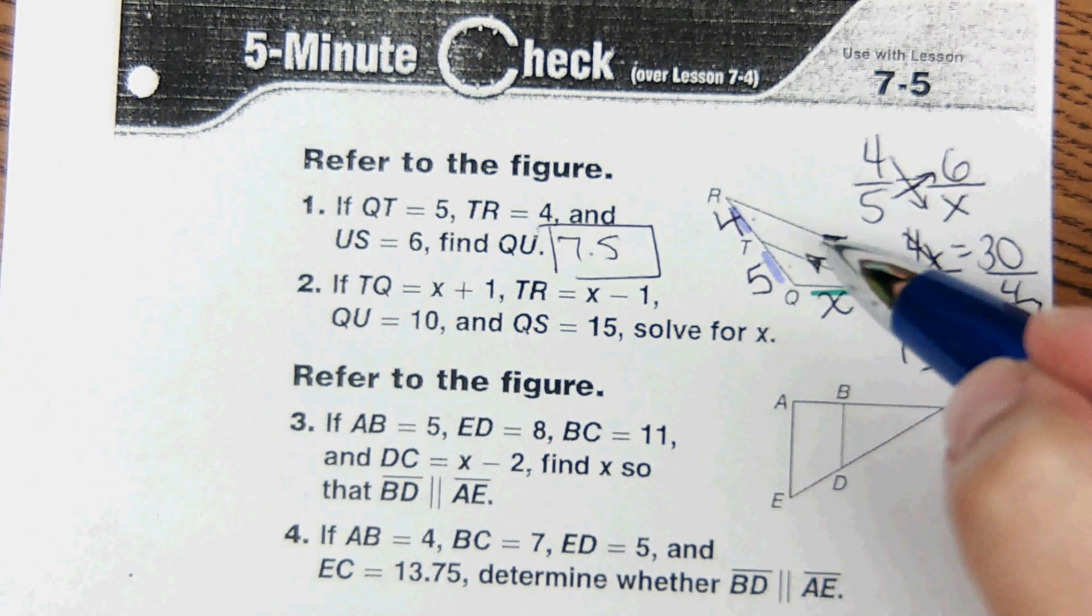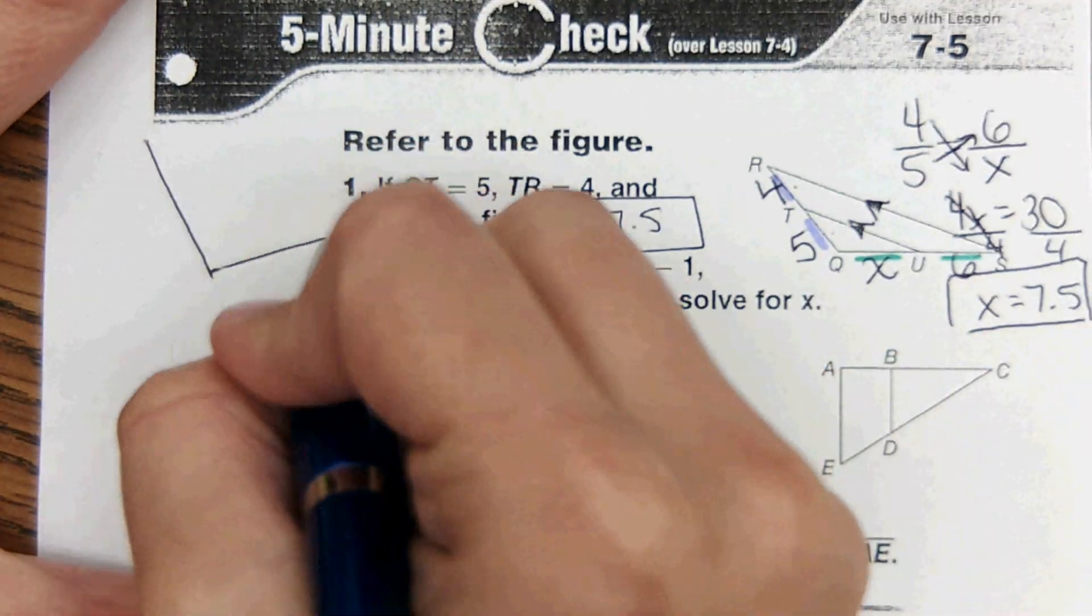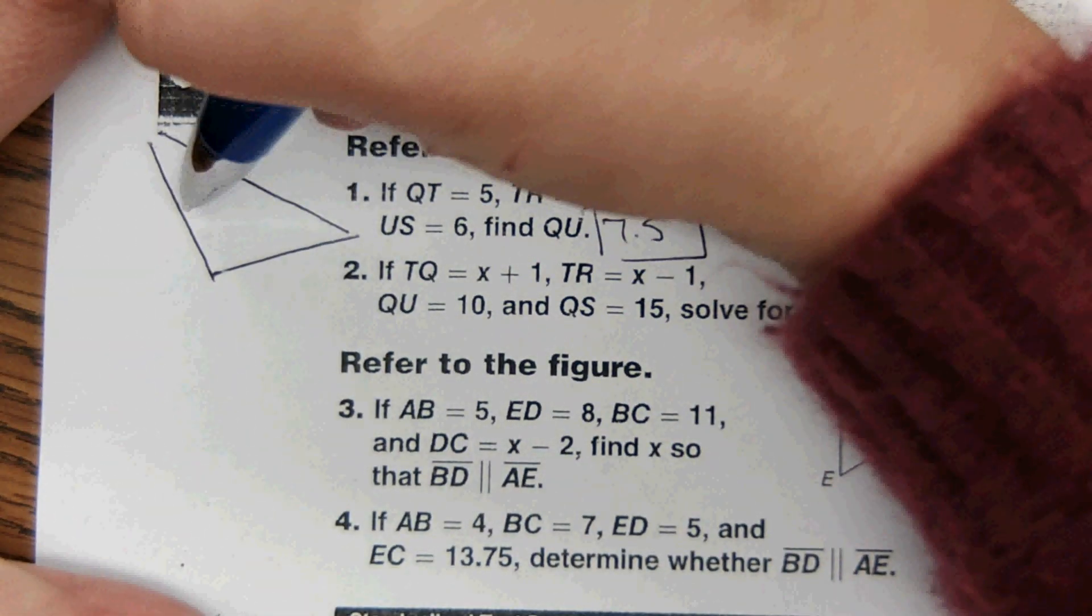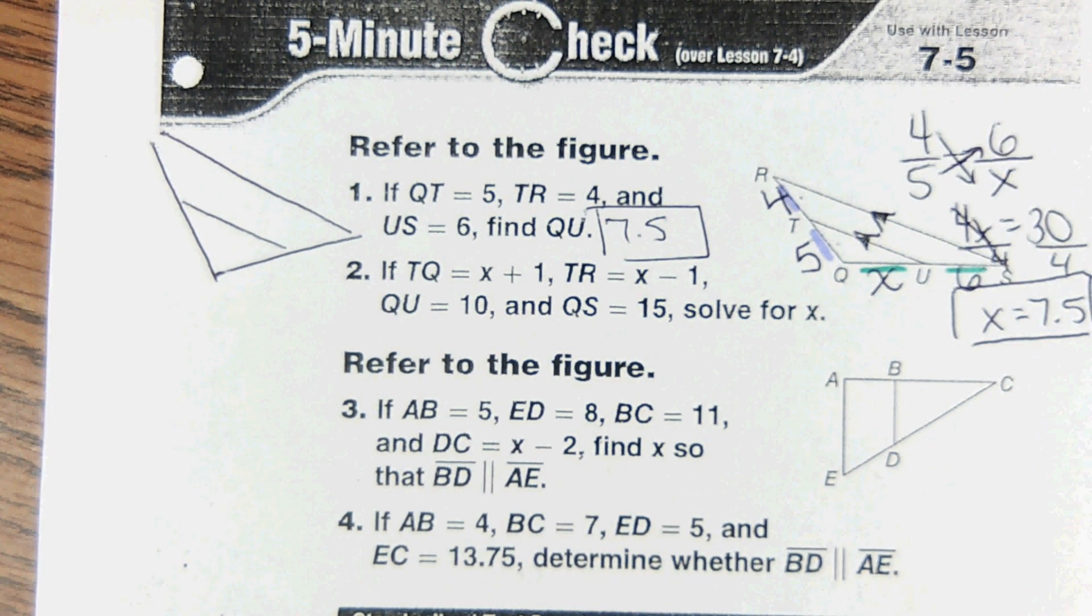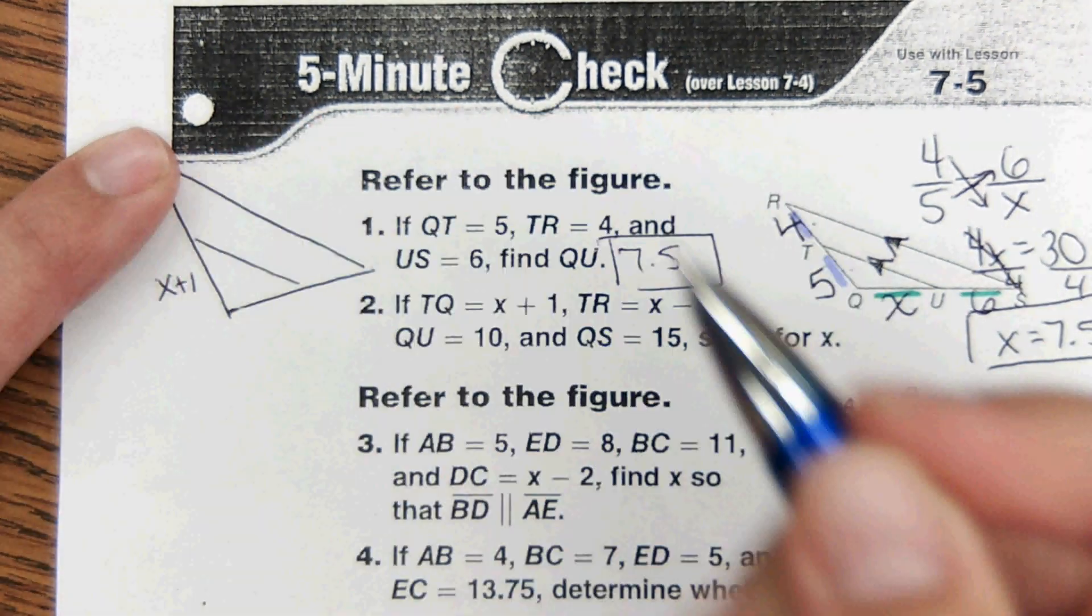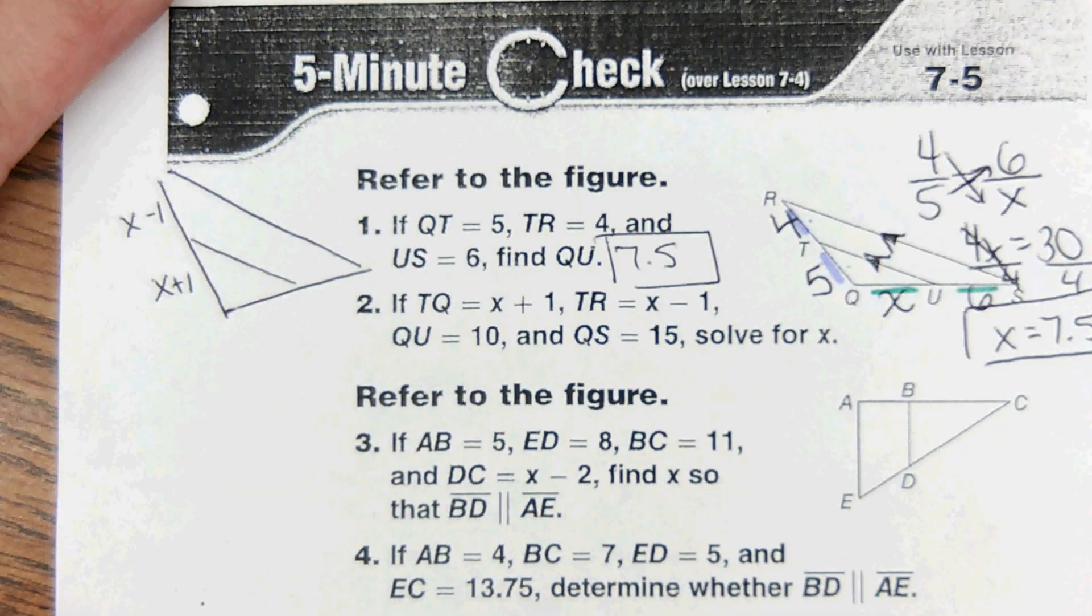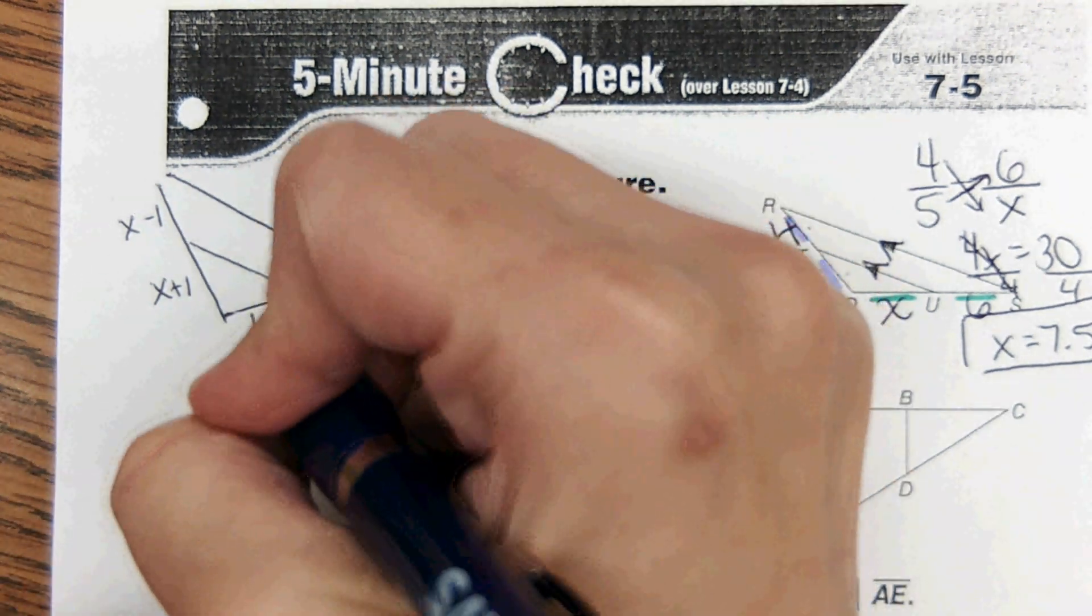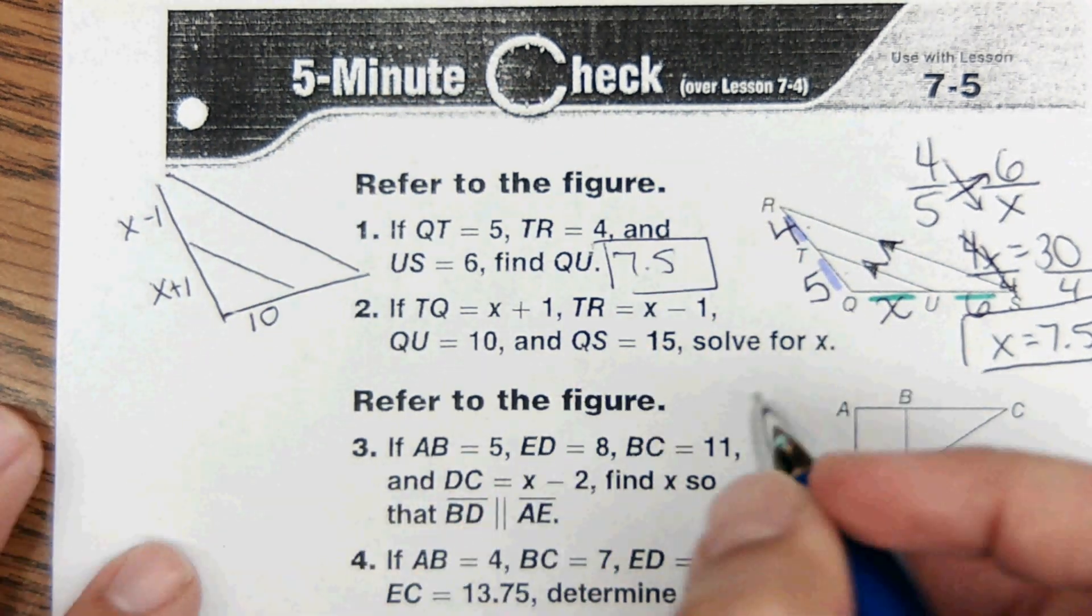I was supposed to use the same picture for the next problem. Okay, so I'm going to redraw this again over to the side because it wants us to use the same picture again. Okay, so TQ is x plus one, so that would be this x plus one. TR is x minus one, right here.